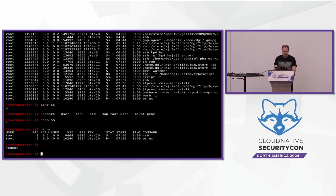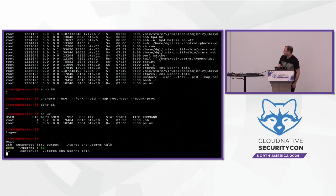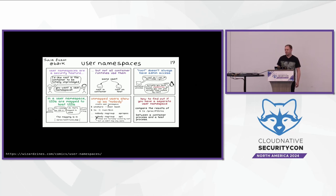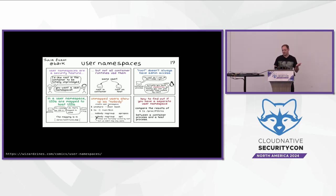I quite like this as a comic example of what user namespaces are. This is from Julia Evans with Wizardzines, and she's got a whole series on containers and what they're built out of. And as you can see on one of the panels here, it says that not all container runtimes use them. Kubernetes for a long time has not used user namespaces. It's been possible to enable them on Docker, but by default most people don't, and they're often not used, which is a shame.